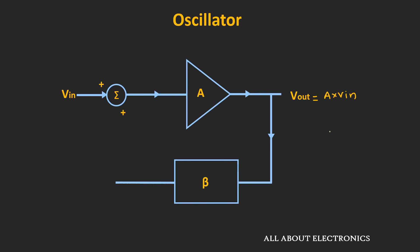Now let's say this output signal is given as the input to the feedback circuit. The feedback circuit is usually a frequency selective circuit or a resonant circuit. The output of this feedback circuit is equal to Vf.